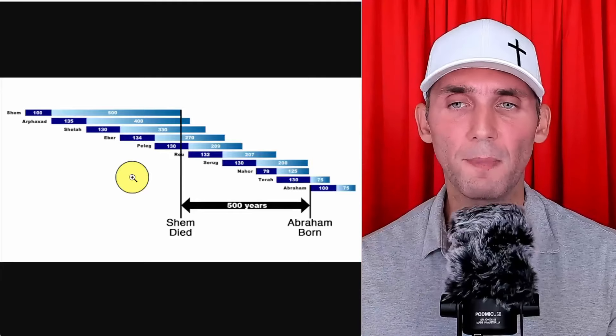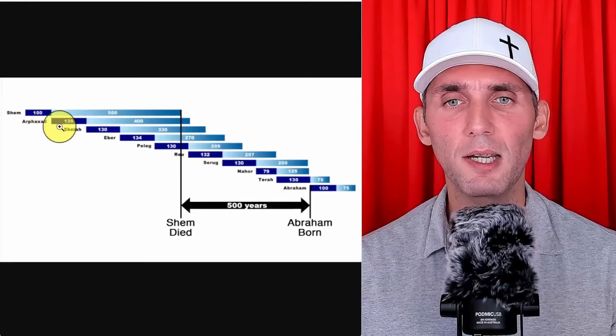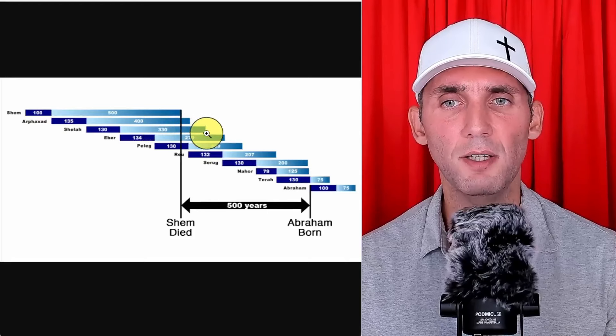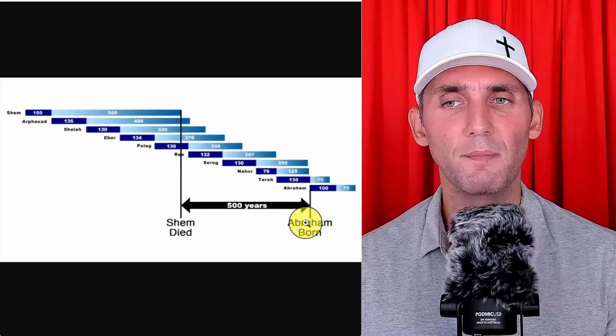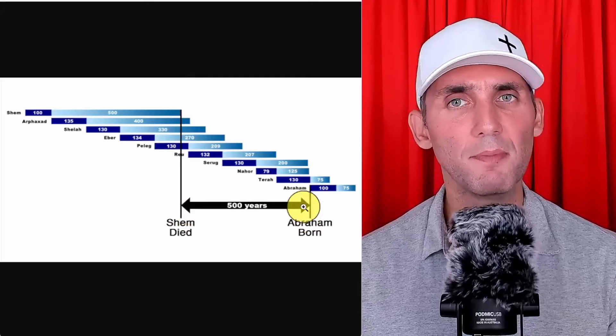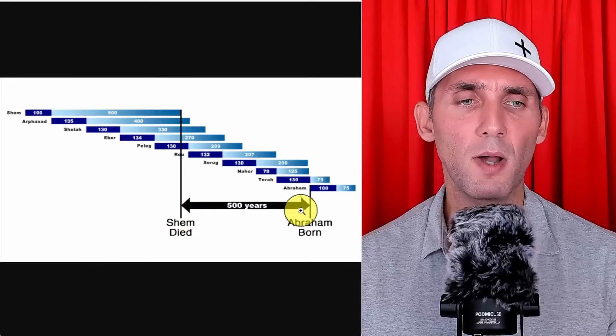You'll see what the agenda behind changing these ages was, because it's a very sinister agenda. When you use the Septuagint numbers, everyone died before their sons — meaning everybody had normal life expectancy in the sense that you wouldn't outlive your children. So when you apply the actual ages from the Septuagint, this is much more realistic. Shem did not outlive his son. Arphaxad did not outlive his son. Shelah did not outlive Eber. Eber did not outlive Peleg. Nobody outlived anybody in terms of their son. Every father died before their son. And Shem died about 500 years before Abraham. There was no contact between Shem and Abraham.